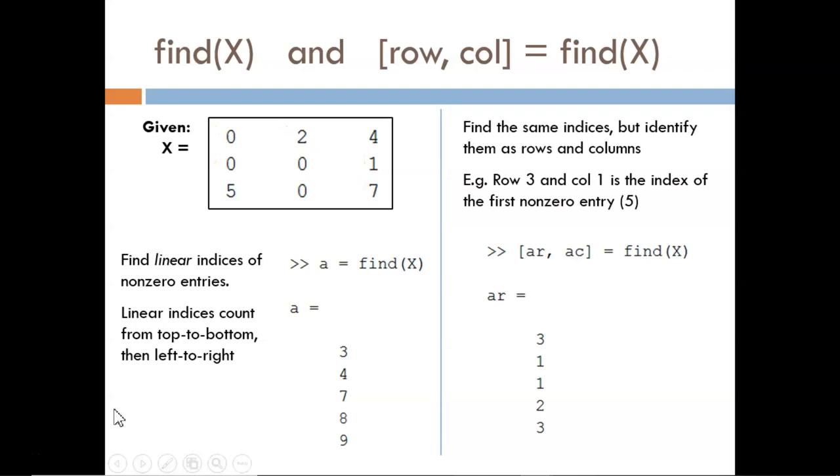More often, we like to see the rows and columns rather than the linear indices. To obtain that output, we need to request two output arguments. The syntax for doing that is shown here. On the left side of the assignment operator, we list two variable names within brackets. Reading the results of this function call, the first non-zero entry is located at row 3, column 1. The next non-zero entry is located at row 1, column 2, and so on.